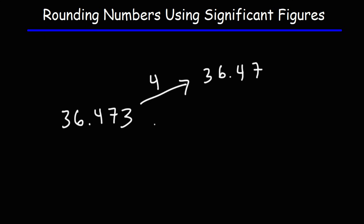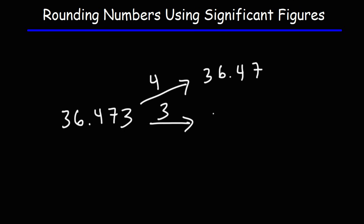Now let's get back to this problem. How can we round this number to three significant figures? So 4 is the third significant digit. Looking at the number to the right of 4, we have a 7. 7 is 5 or more, so we're going to round a 4 up to a 5. So this is going to be 36.5.